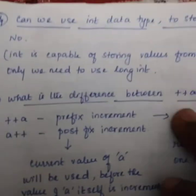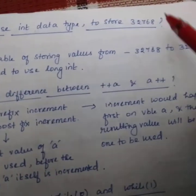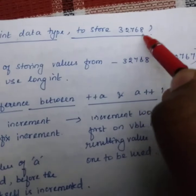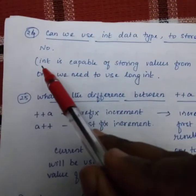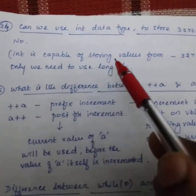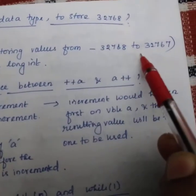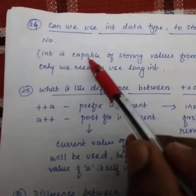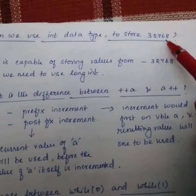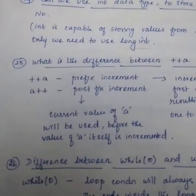Next question. Can we use int data type to store a value 32768? No. Why no? Because int is capable of storing values from -32768 to 32767. If we need to store more than this, we can use long int or unsigned int.